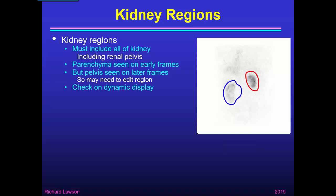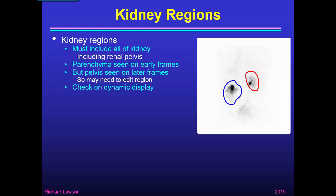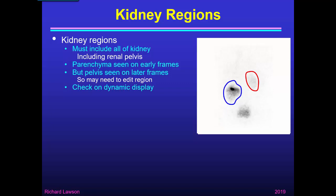It's then a very good idea to check that on a dynamic display. Here we have a continuous cine display of all the frames from the renogram with the regions of interest superimposed, so that we can check that the kidneys remain within the region of interest throughout.